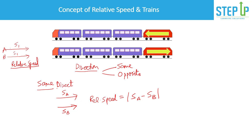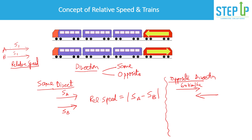Now let's discuss the case of opposite direction. You must have traveled in a train — when another train crosses yours in the opposite direction, it feels very fast even if its speed is only 40 km/h. If your train is going at 60 km/h and the other at 40 km/h in the opposite direction, the relative speed adds up to 100 km/h, which is why it feels faster. In opposite direction, speeds add up.